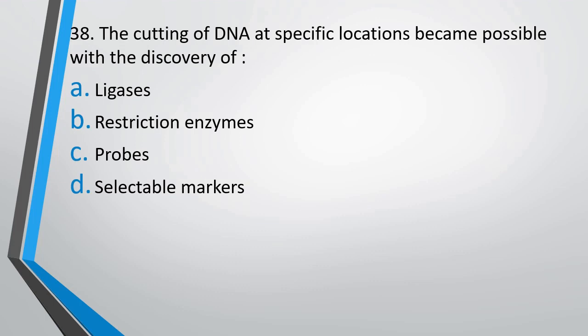Question number 38. Cutting of DNA at specific locations became possible with the discovery of restriction enzymes. The correct answer is option B — restriction enzymes.